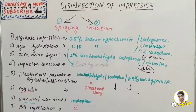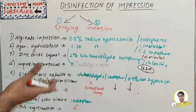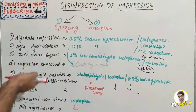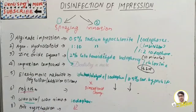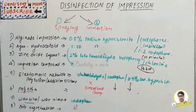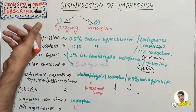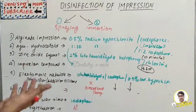For bite registration, the material is made of various compounds and can be handled in the same manner as impressions of the same material. So whichever material is used for bite registration, the disinfection method for that particular impression material should be followed. These registrations are disinfected with the technique of rinsing or spraying.